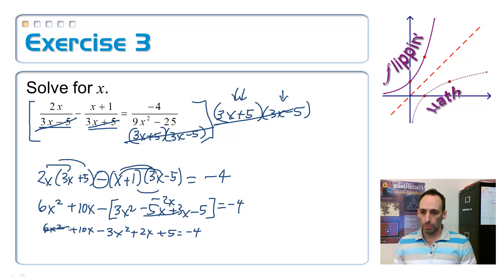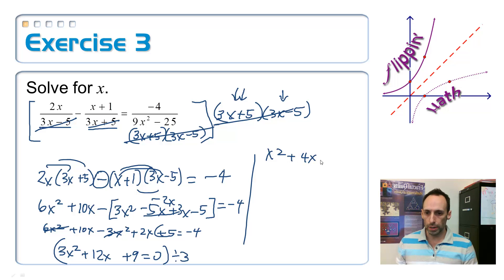So 6x squared plus 10x. I'm going to have to subtract everything, so it's just changing all the signs, minus 3x squared plus 2x plus 5 equals negative 4. Now, combine all our like terms. So this together with this makes a 3x squared. A 10x and a 2x gives me plus 12x. And then I have a positive 5 over here. Add the 4 to it, plus 9 equals 0. Look, everything is divisible by 3. So why don't I divide by 3? So I have x squared plus 4x plus 3 is equal to 0.